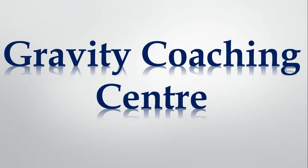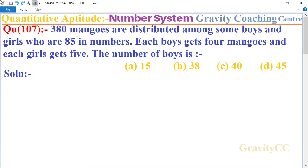Welcome to our channel, Gravity Coaching Center. Quantitative Aptitude, Chapter Number Systems, Question Number 107: 380 mangoes are distributed among some boys and girls who are 85